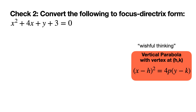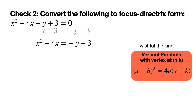Wishful thinking is a useful strategy in math. We see parentheses and something squared in our target form, so we think: what can we do to get there? The answer is to complete the square. A useful first step is to get all the x terms on one side. We have x squared plus 4x equals negative y minus 3 by subtracting y and 3 from both sides.